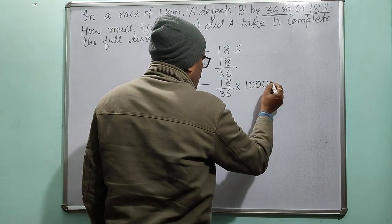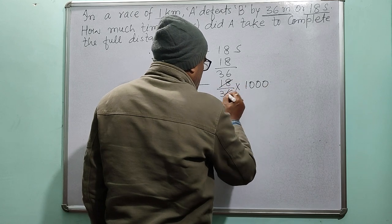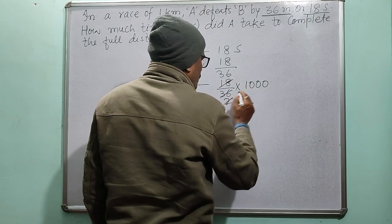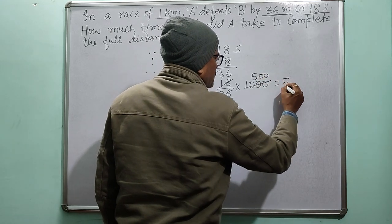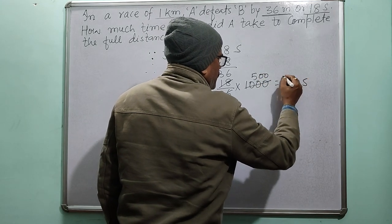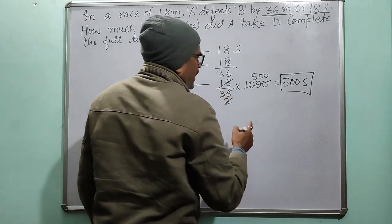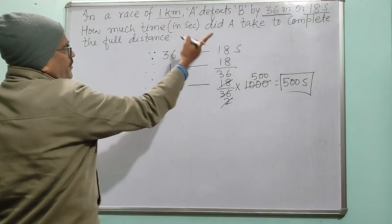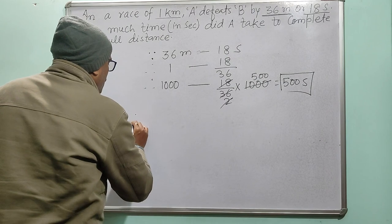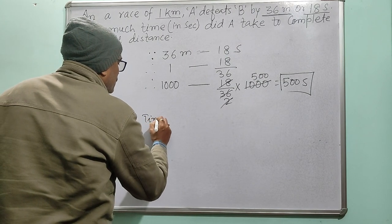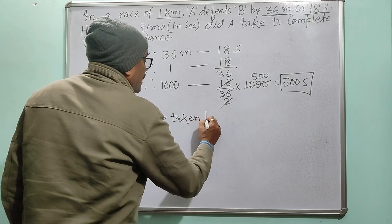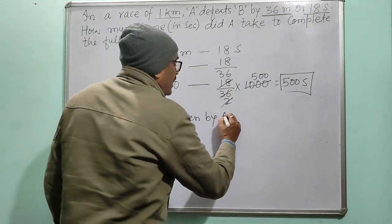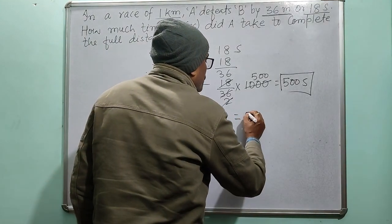18 divided by 36 equals 1/2, multiply by 1000 equals 500.